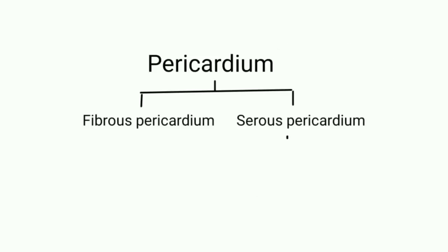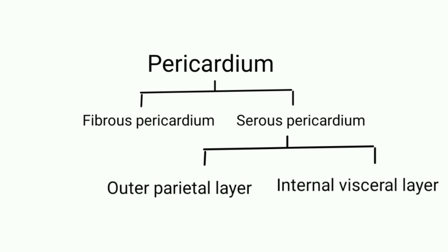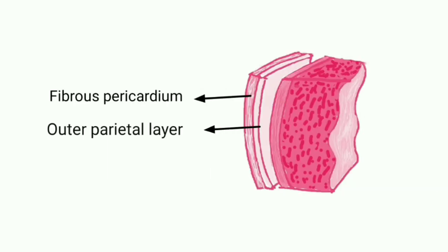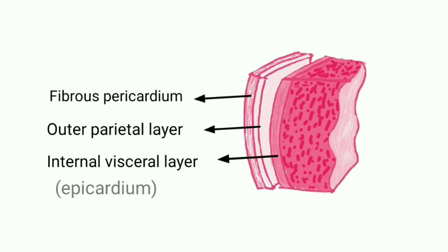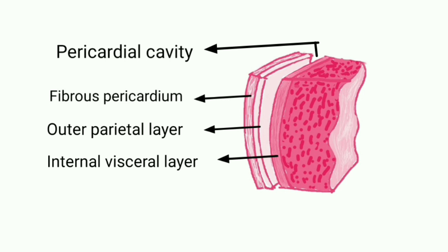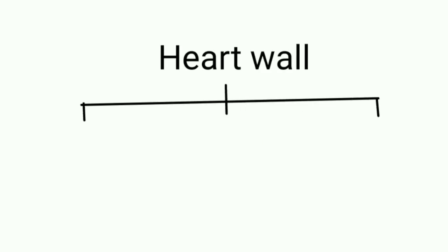The serous pericardium is itself divided into two layers: the outer parietal layer and the internal visceral layer. The outer parietal layer lines the internal surface of the fibrous pericardium. The internal visceral layer forms the outer layer of the heart wall, also known as the epicardium. Each of these layers is made up of a single sheet of epithelial cells known as mesothelium. Between the outer and inner serous layers there is a pericardial cavity which contains a small amount of lubricating serous fluid. This serous fluid serves to minimize the friction generated by the heart as it contracts.